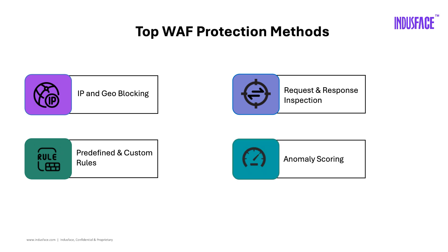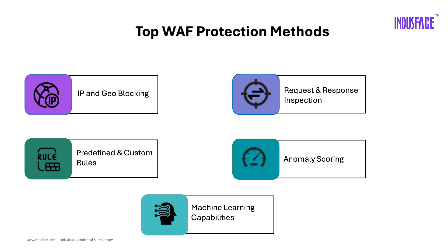Anomaly scoring: assigns scores to deviations, helping refine threat detection accuracy. Machine learning helps WAFs stay adaptive, automatically creating new policies for emerging threats.